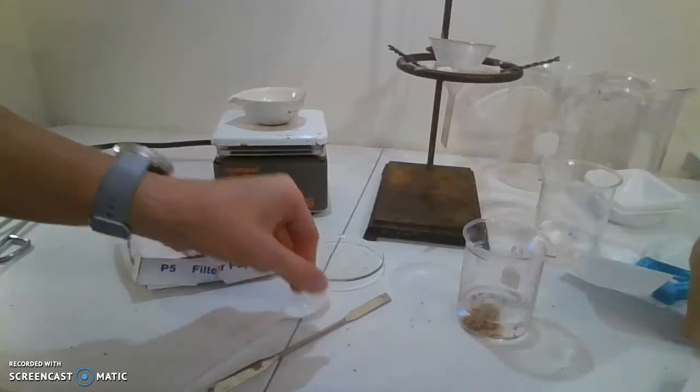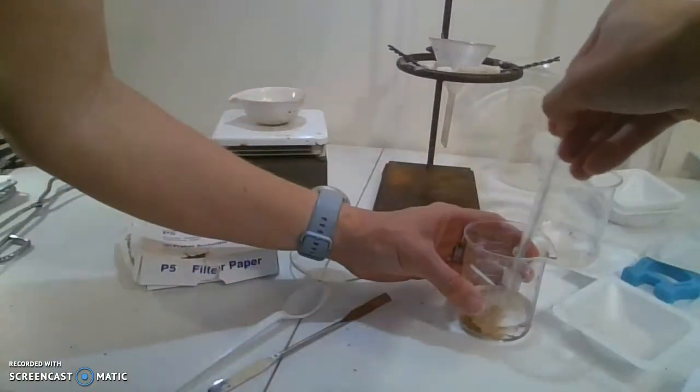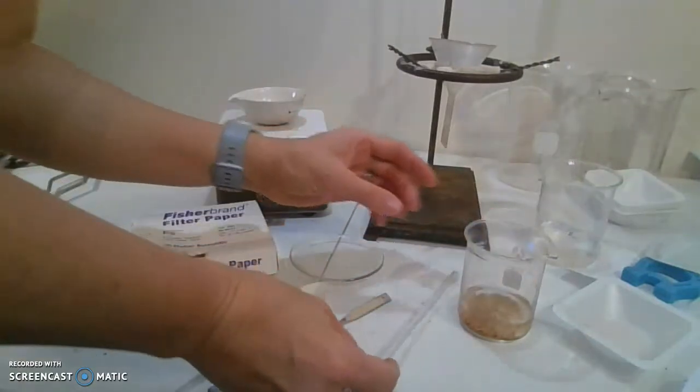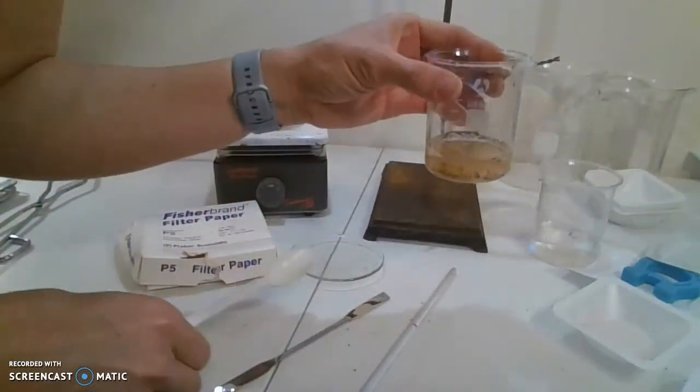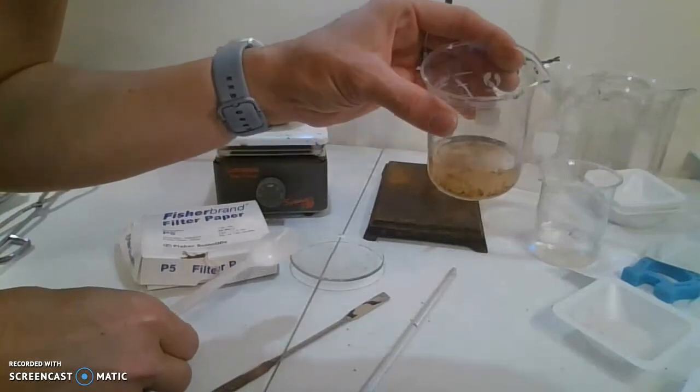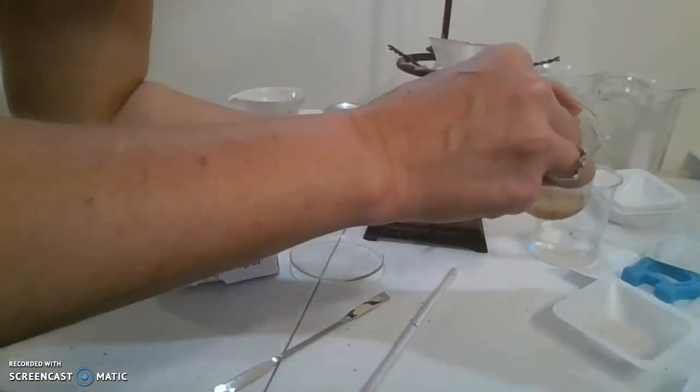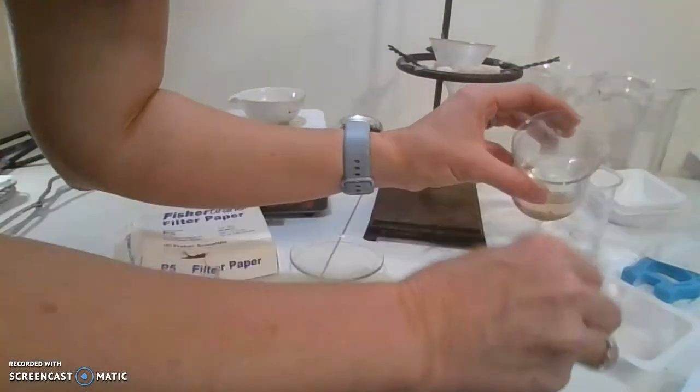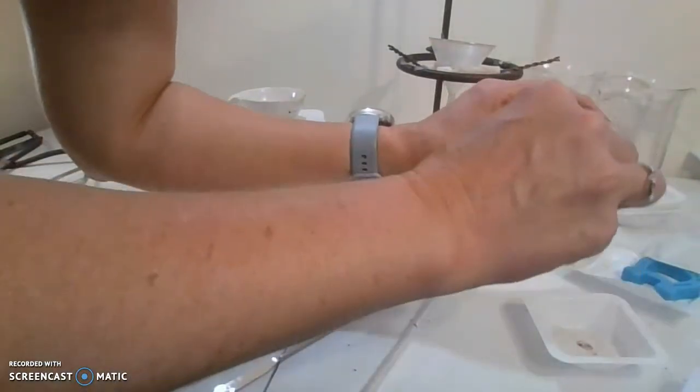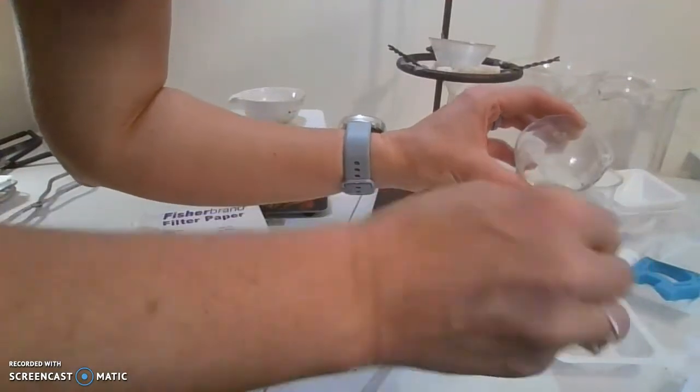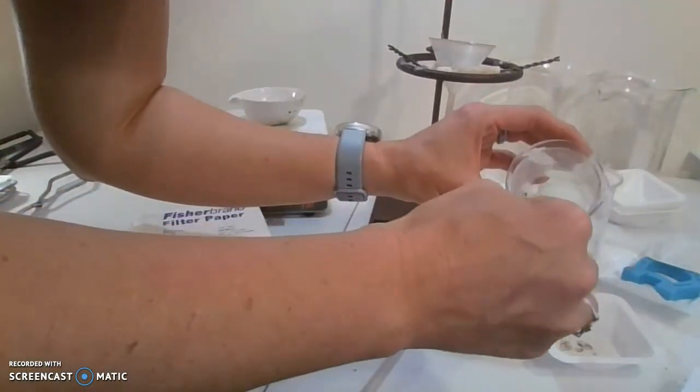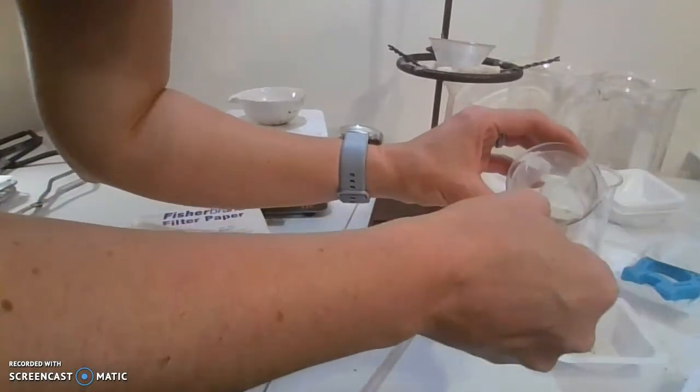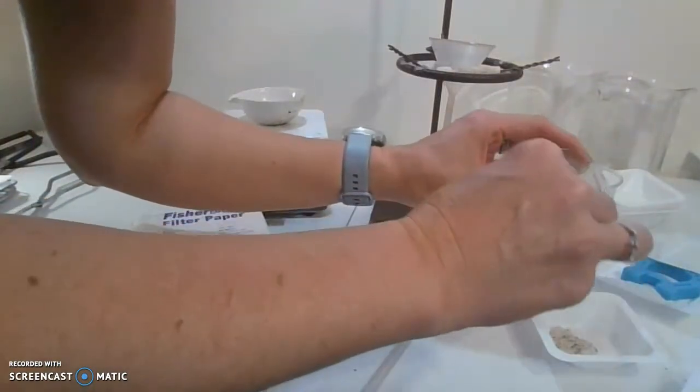Stir with my stirring rod, and what we see is the poppy seeds are floating. So we're going to carefully remove the poppy seeds. This tends to be a little difficult to do and you have to do it very quickly because the poppy seeds tend to get waterlogged and then sink, and then you have a really tough time separating them.